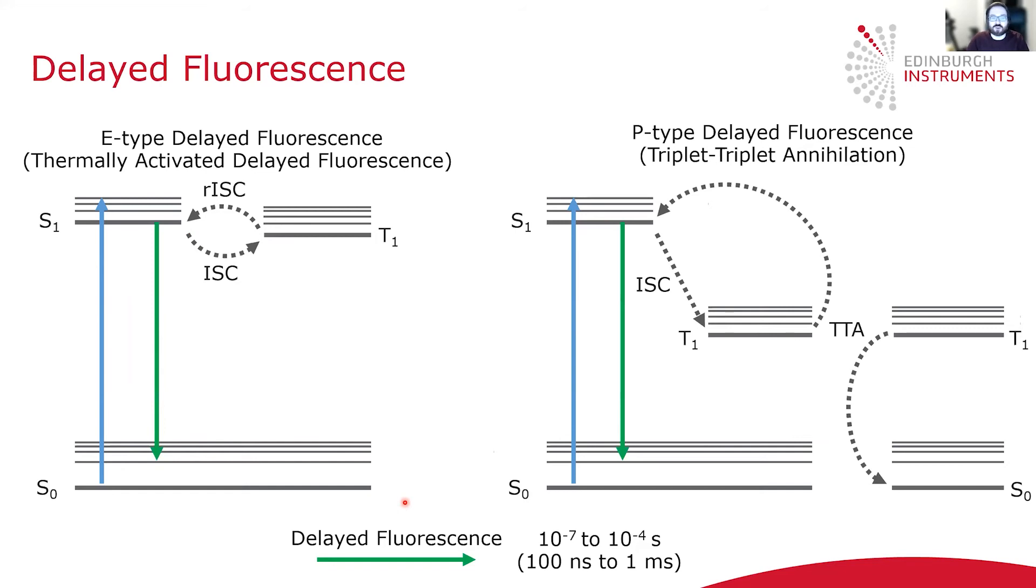Fluorescence and phosphorescence are the most common processes that occur in molecules, but a phenomenon called delayed fluorescence can also occur. There are two main types of delayed fluorescence.